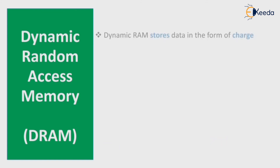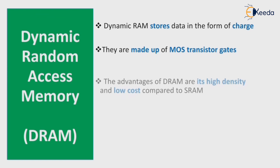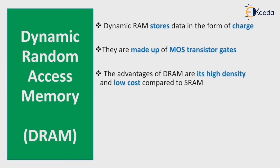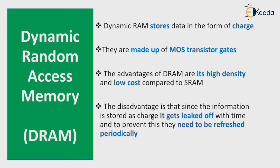Dynamic Random Access Memory, or DRAM, stores data in the form of charge. DRAM cells are made up of MOS transistor gates. The advantages of DRAM are its high density and low cost compared to SRAM. The disadvantage is that the stored charge leaks off over time, so the memory must be refreshed periodically to prevent data loss.